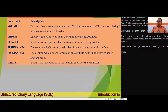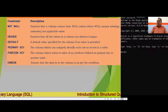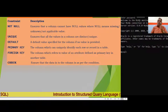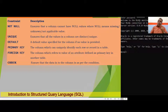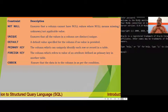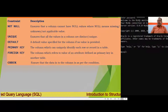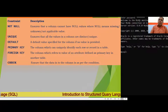PRIMARY KEY is a constraint used to reduce duplicacy from an attribute. It is like a UNIQUE key constraint, but the difference is that a UNIQUE key column can remain blank, whereas a PRIMARY KEY column cannot remain blank. FOREIGN KEY is a constraint where a primary key of table A is used in table B — then it is known as a foreign key. CHECK constraint ensures that data in the column satisfies a specified condition.